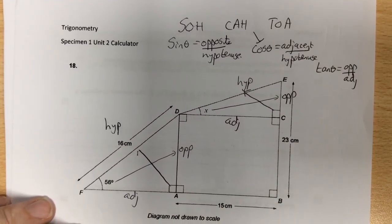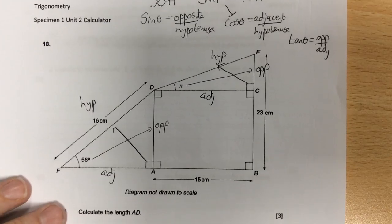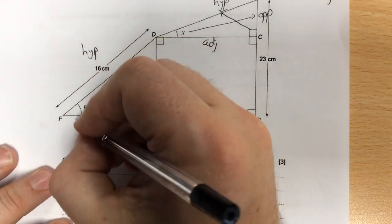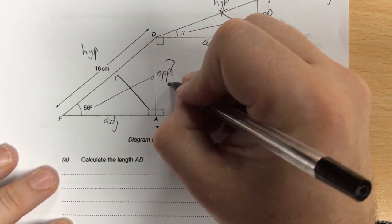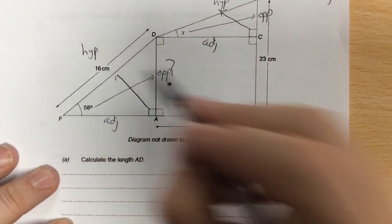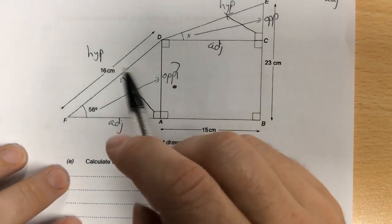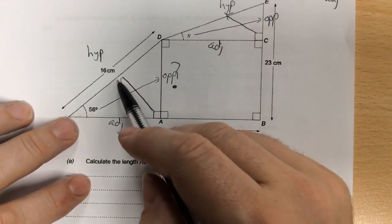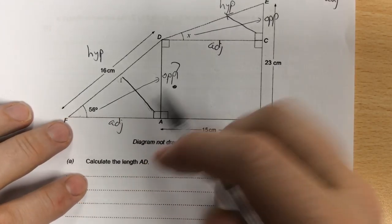First thing to do in this one is to find the length AD. The length AD is in this triangle here. I have a right angle triangle. I've labeled the sides: opposite the angle is the opposite, hypotenuse is the longer side, and the third one is adjacent.